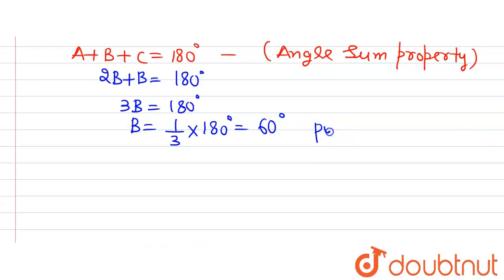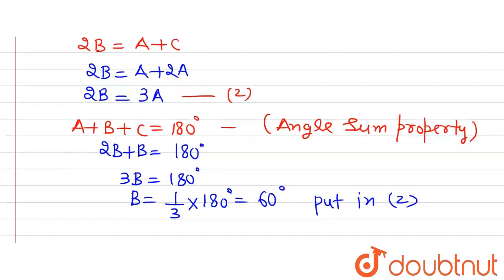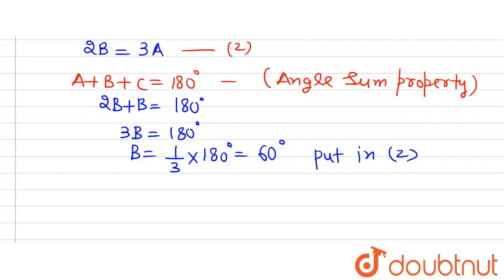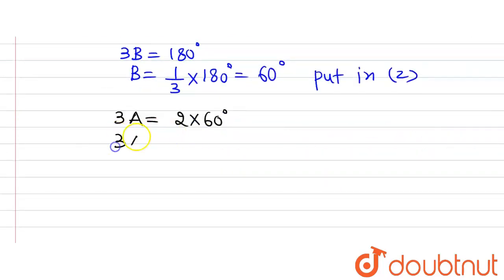Putting in equation 2, what we get is 3A is equal to 2 multiplied by B, which is 60 degrees. So this will give us 3A is equal to 120 degrees. So A will be equal to 1 divided by 3 multiplied by 120 degrees, which will be equal to 40 degrees.